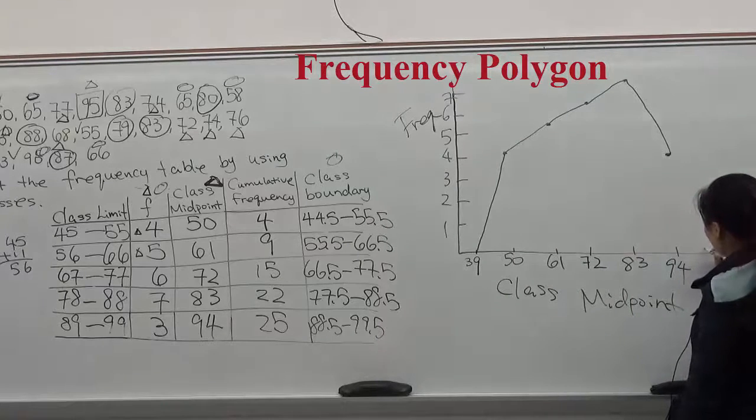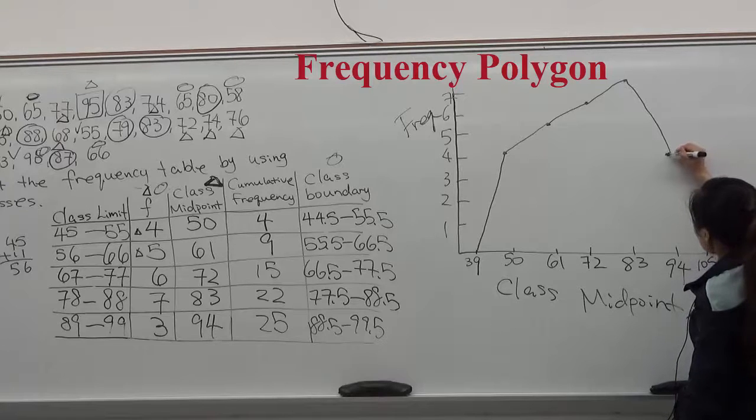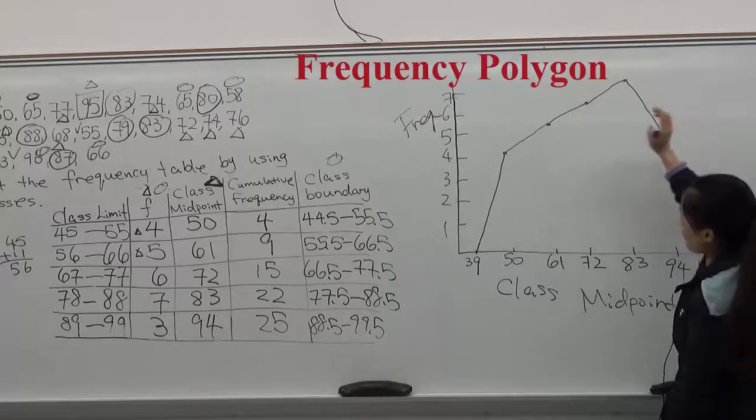And 94, add 11 to 94, this is 105. Connect the last point to 105, 0. This is a frequency polygon.